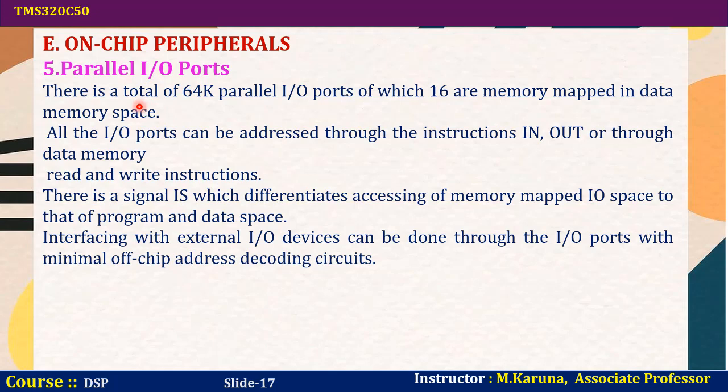There are a total of 64 parallel I/O ports, of which 16 are memory-mapped in data memory space. All I/O ports can be addressed through IN and OUT instructions or through data memory to perform read and write operations. A signal IS differentiates accessing of memory-mapped I/O space from program and data space. Interfacing with external I/O devices can be done through the I/O ports with minimal off-chip address decoding circuitry.